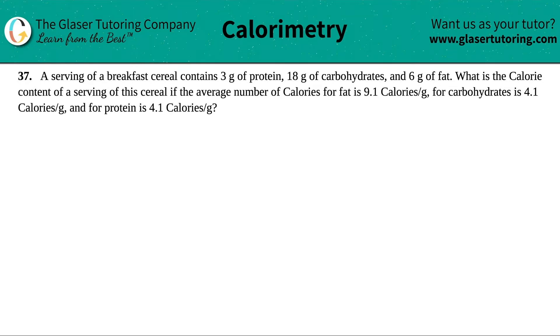Number 37, a serving of a breakfast cereal contains three grams of protein, 18 grams of carbohydrates, and six grams of fat. What is the calorie content of the serving of the cereal if the average number of calories for fats is 9.1 calories per gram, the carbohydrates is 4.1 calories per gram, and the protein is 4.1 calories per gram as well.